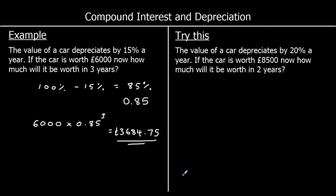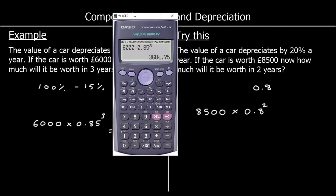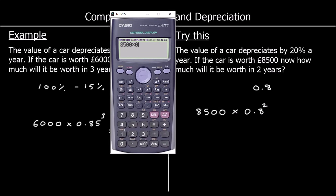A question for you to try — pause the video, give it a go, and press play when you're ready. The value of a car depreciates by 20% a year. If the car is worth £8,500 now, how much will it be worth in two years? 100 take away 20 means you want 80% each year, so the multiplier is 0.8. It's worth £8,500 now, so 8,500 times 0.8 squared, which is £5,440.